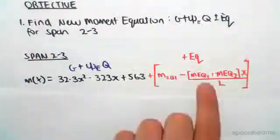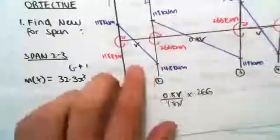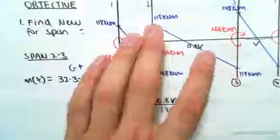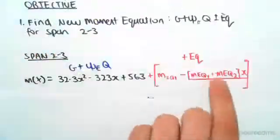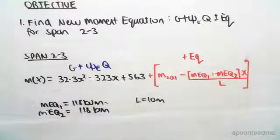Now the reason I've done MEQ and MEQ1 and MEQ2 is because you can see in this case we have 118 and 118, but if I were to do span 1 to 2, it's 118 and 148. So it's very important you have this type of formula set up. You can't generalize it too much.